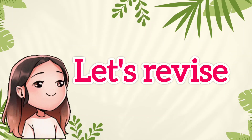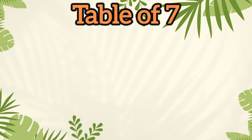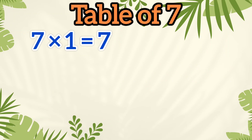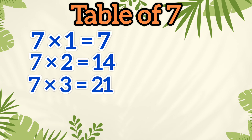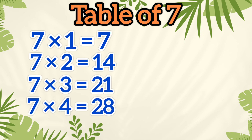Now, let's revise together. Seven ones are seven. Seven twos are fourteen. Seven threes are twenty-one. Seven fours are twenty-eight.